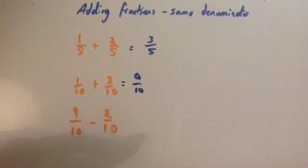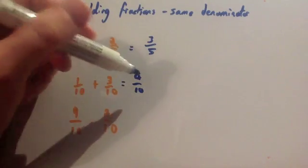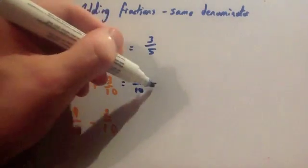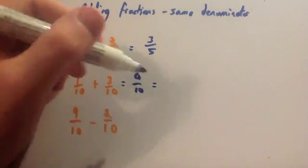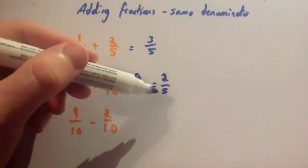Now, if you've seen the video on simplifying fractions, you'll realize that four tenths can be cancelled down or simplified. They're both divisible by two, so you divide them both by two. Four divided by two is two. Ten divided by two is five. So the answer would be two fifths.